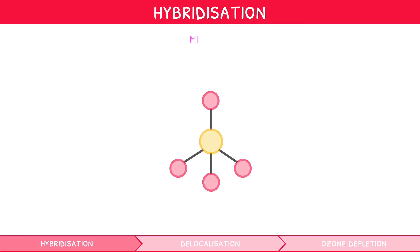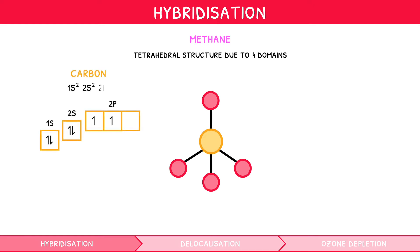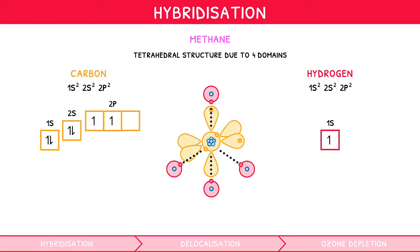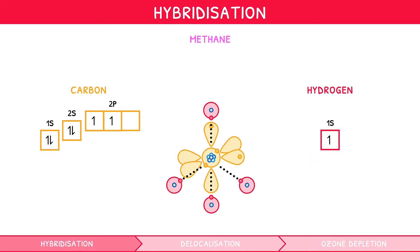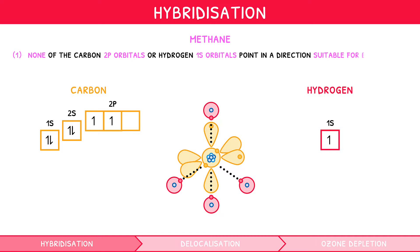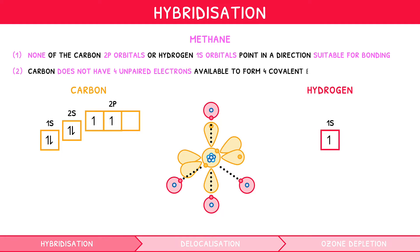Let's consider the structure of methane. We know it would have a tetrahedral structure, as it has 4 electron domains. But noting the electronic configuration of carbon and hydrogen and drawing the outer orbitals, we can see two problems with our logic so far. None of the carbon's 2p orbitals or hydrogen's 1s orbitals point in a direction suitable for bonding these atoms in a tetrahedron, and carbon does not have 4 unpaired electrons available to form the 4 covalent bonds we know it does, one to each hydrogen.